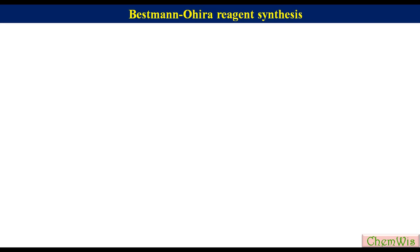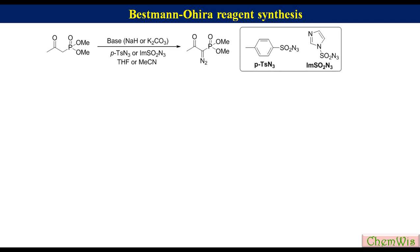Bestmann-Ohira reagent synthesis: the Bestmann-Ohira reagent is generated by the reaction of dimethyl 2-oxopropyl phosphonate with para-toluenesulfonyl azide or imidazole-1-sulfonyl azide in the presence of a base like sodium hydride or potassium carbonate in THF or acetonitrile.